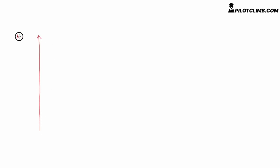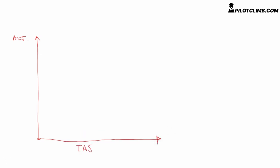I'm going to draw a vertical line indicating altitude — here is mean sea level and here is very high altitude, the cruise altitude. The horizontal line indicates true airspeed. Let's say this is Mach 1. The Boeing 737 has a critical Mach number of 0.82. At mean sea level, 0.82 is here because mean sea level speed of sound is 661 knots.